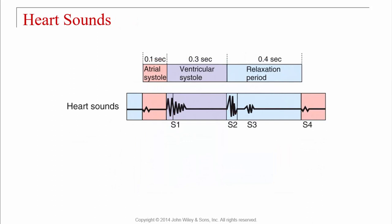Heart sounds: S1 is when the AV valves — tricuspid and bicuspid — slam shut, producing turbulence you can hear. S2 is when the semilunar valves — the aortic and pulmonary valves — slam shut. S3 is sometimes heard in pathologies, and S4 is also usually only heard in pathological conditions.